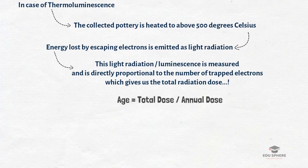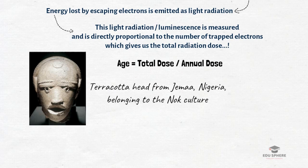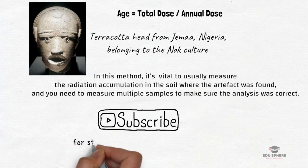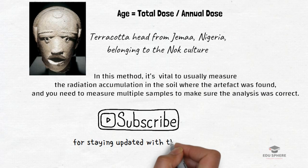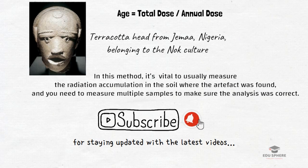A real-world example is a terracotta head from Jemma, Nigeria, belonging to the Nok culture — thermoluminescence provided the first reliable date for this and other terracottas from the Nok region. Multiple samples must be measured, and radiation accumulation in the surrounding soil must also be assessed. One key limitation is that once an object is heated to determine its age using this method, the clock resets to zero and the process cannot be repeated to verify authenticity.